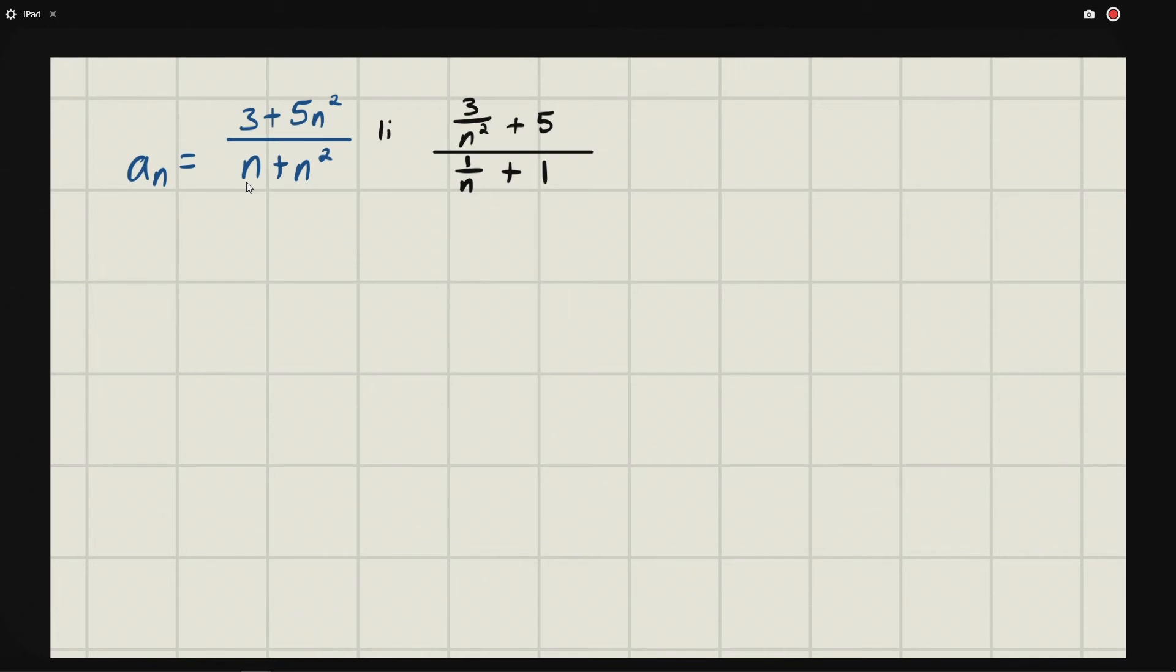The limit as n goes to infinity of this thing is going to be equal to three over infinity which is zero plus five, over one over infinity which is zero plus one, and so we're going to get five.